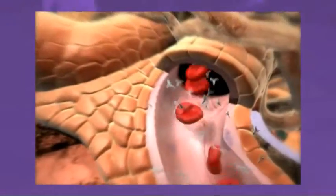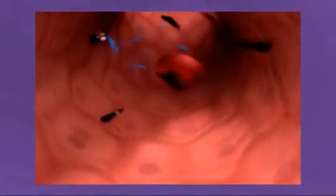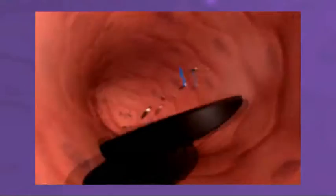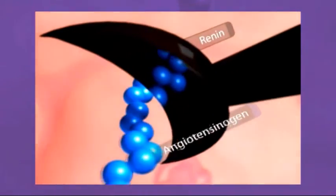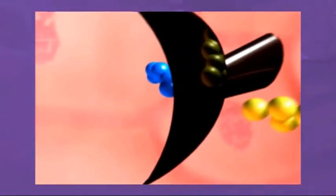The enzyme renin is secreted into the bloodstream from the kidneys' juxtaglomerular cells. Once in the bloodstream, renin activates the system by cleaving angiotensinogen to form angiotensin-1.